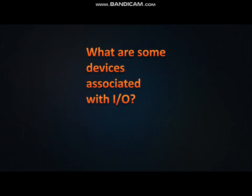What are some devices associated with Input and Output? Within the world of Input and Output, there are two primary types of devices: input devices and output devices. Input devices only allow for input of data to another device. An example of an output device is a monitor, as it can only receive and display the data that is sent as output from a computer.